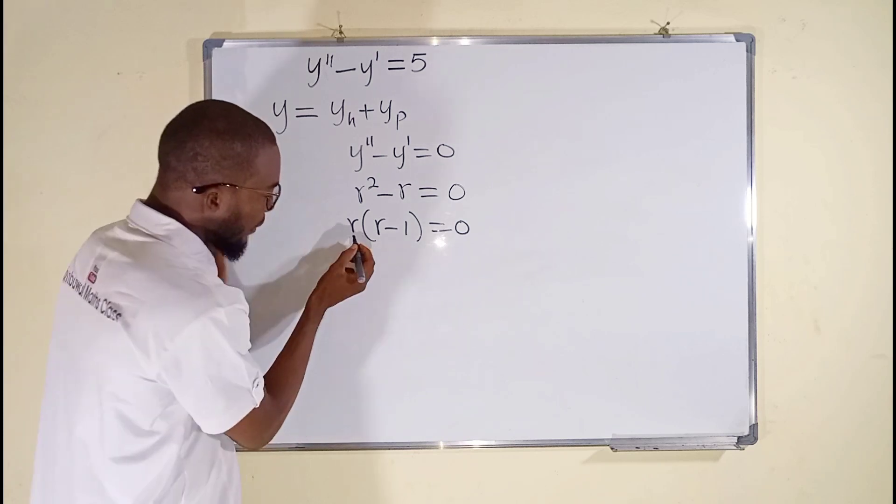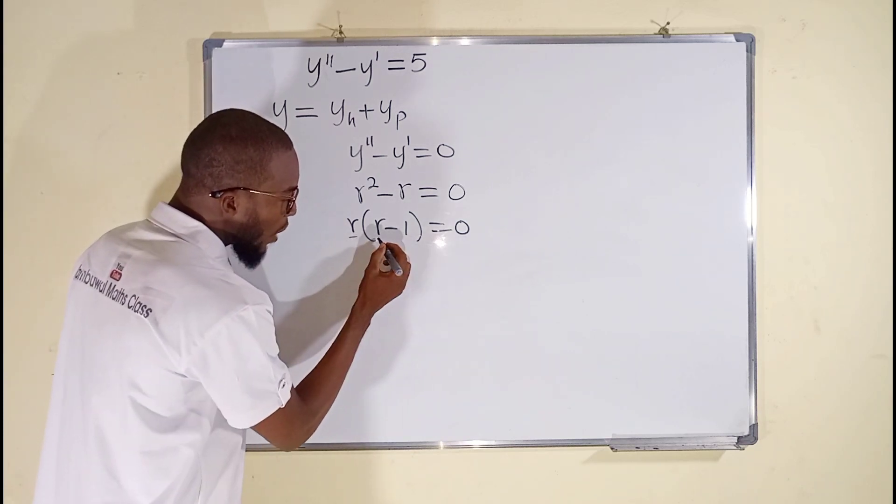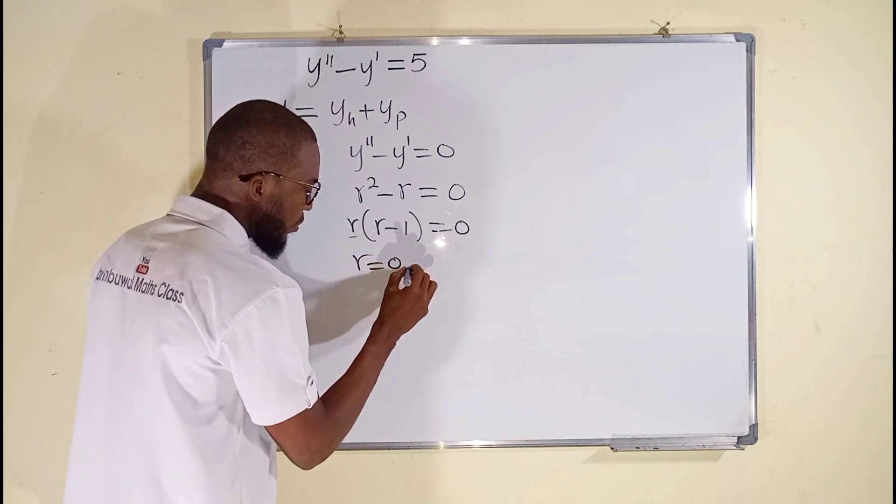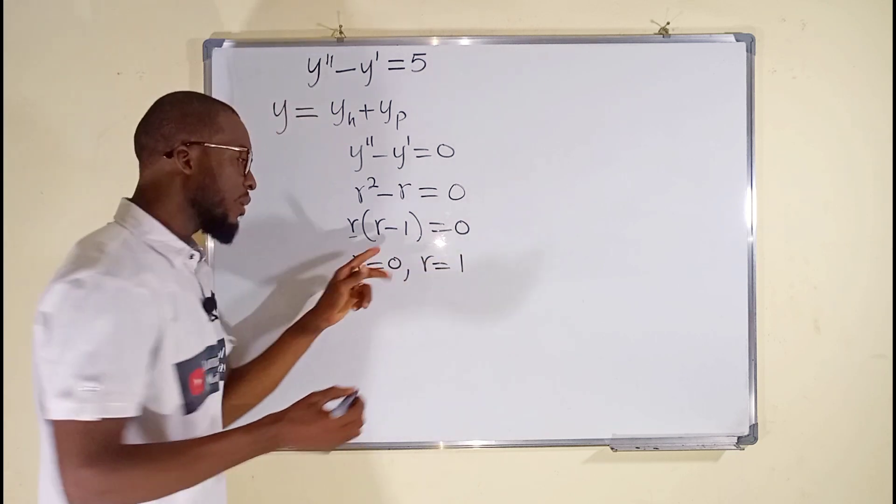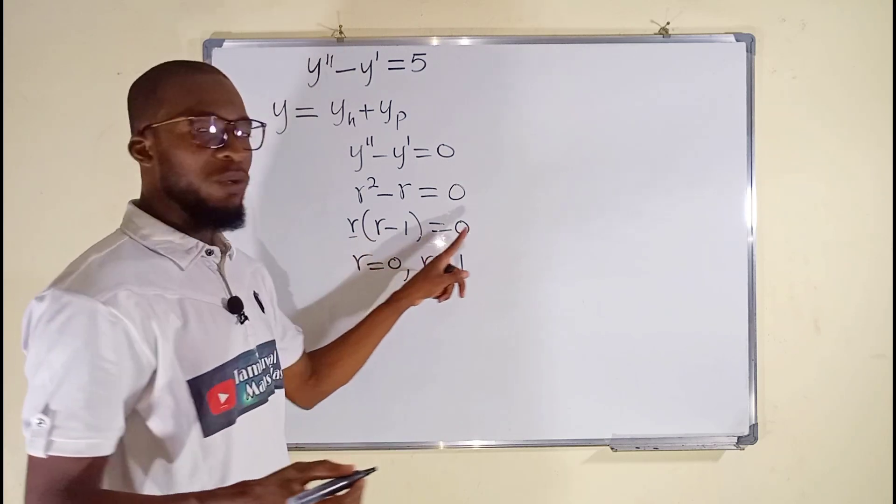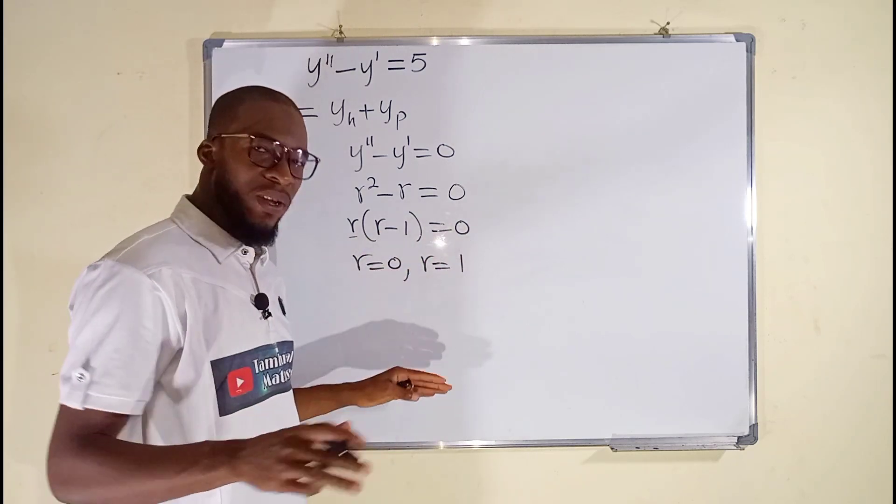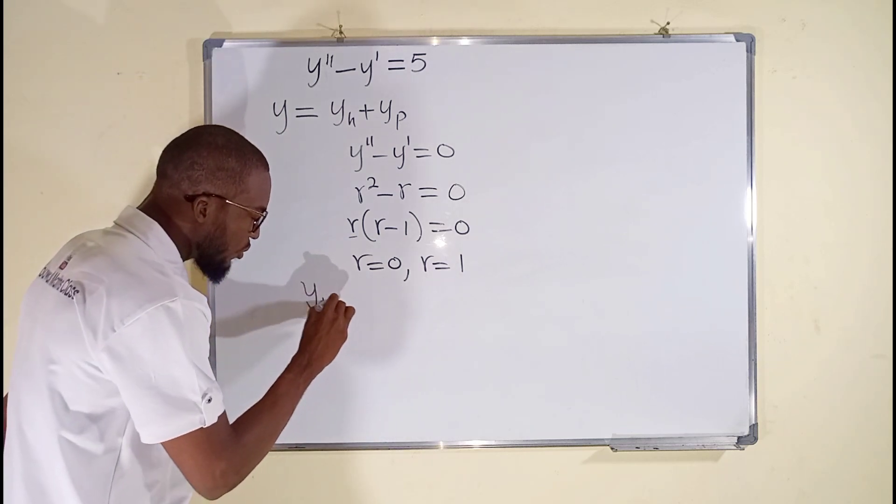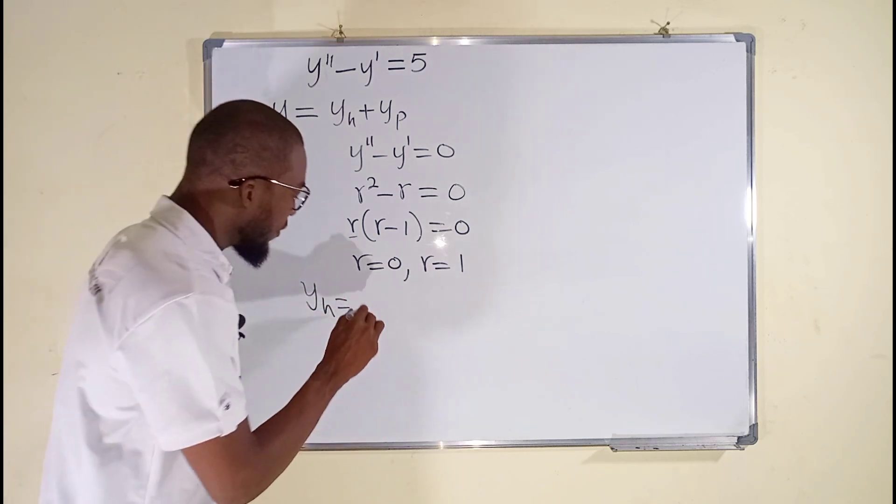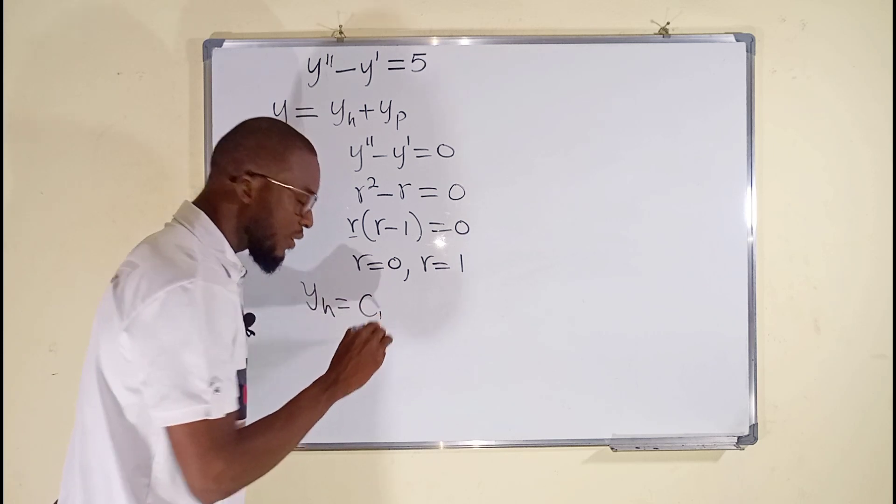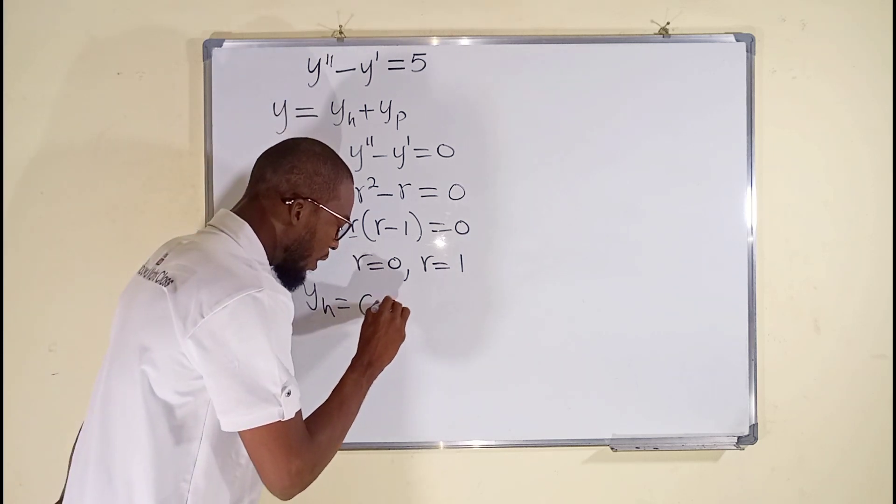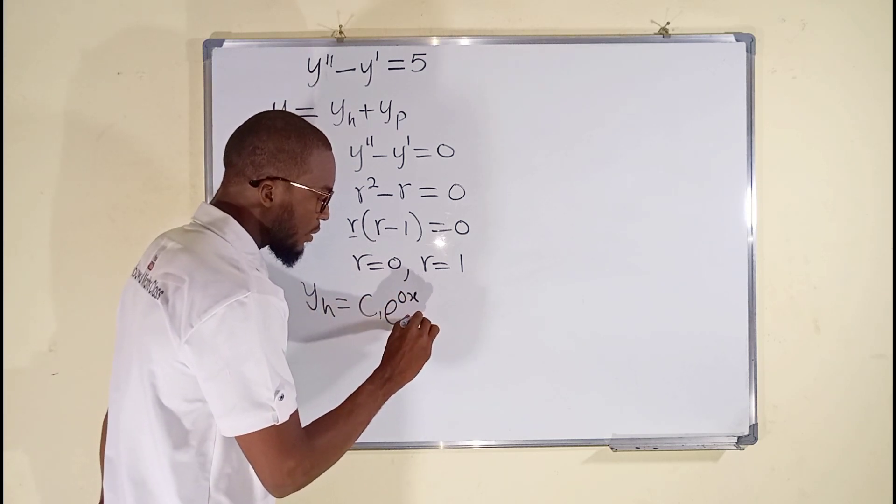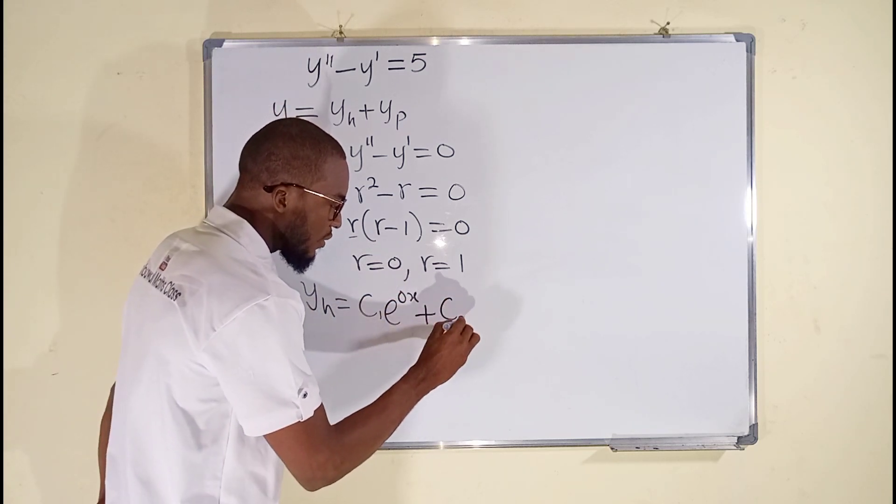This implies that either r equal to 0 or r minus 1 equal to 0. So r could be 0 or r equal to 1 because if you set r minus 1 to be equal to 0, definitely r must be equal to 1. So y sub h, which is the general solution, will be of the form of a constant, we call it c1, e to the first root 0 multiplied by x plus another constant c2, e to the second root multiplied by x.